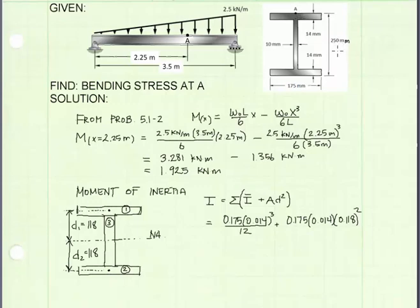We can see that the distance from the neutral axis to the top of the beam is going to be half of 250 or 125 millimeters. Then minus seven, that's half the thickness of the flange.